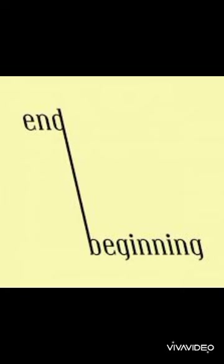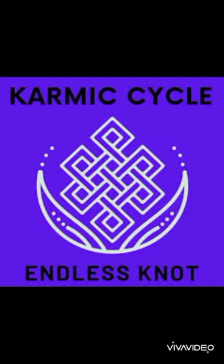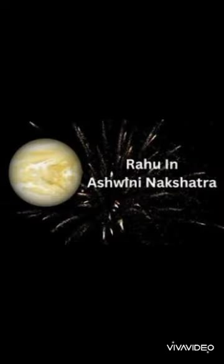Welcome back to my channel Stargate Astrology. The North Node Rahu is in the point of Gandhata. Gandhata means the North Node Rahu is like crossing the bridge — it's transiting from the sign of Aries to the sign of Pisces, and it is at the last degree of Aries. The last degree is always considered to be a Gandhata point.